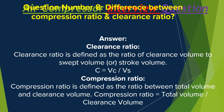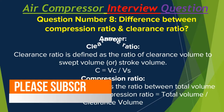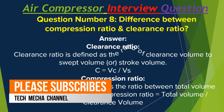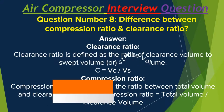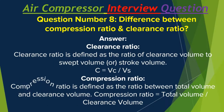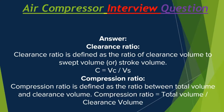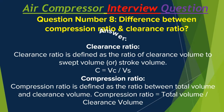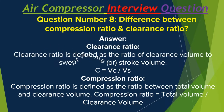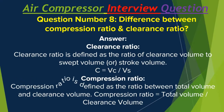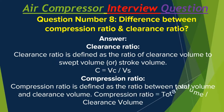Question number 8: Difference between compression ratio and clearance ratio. Clearance ratio is defined as the ratio of clearance volume to swept volume or stroke volume: C = VC / VS, where VS is swept volume and VC is clearance volume. Compression ratio is defined as the ratio between total volume and clearance volume: compression ratio = total volume / clearance volume.